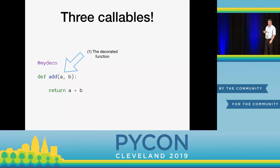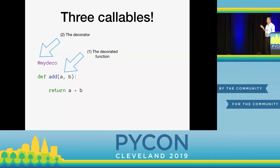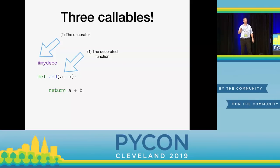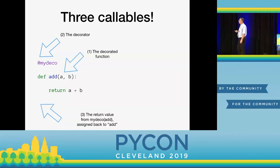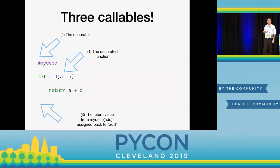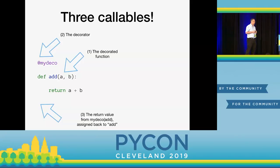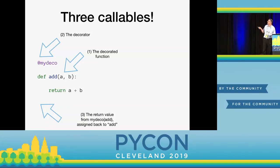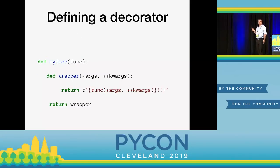Where are these callables? First, we have the decorated function — that's our first callable, add. The second callable is the decorator itself. And the third callable — where this syntax gets a little weird — is actually invisible here. It's the one returned when I call my_deco on add. That callable is the one assigned back to add. So when I call add, I'm not really calling my original add; I'm calling whatever was returned by my_deco(add), which then hopefully calls the original add.